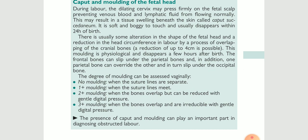The frontal bone can slip under the parietal bone, and in addition one parietal bone can overlap the other, and in turn slip under the occipital bone. Due to the soft sutures and fontanelles, the bones overlap each other in order to reduce the diameter of the skull, giving a favorable head shape for delivery out of the birth canal.